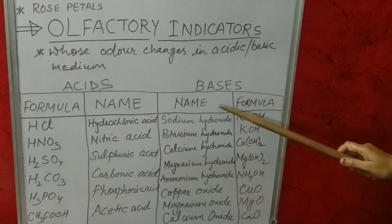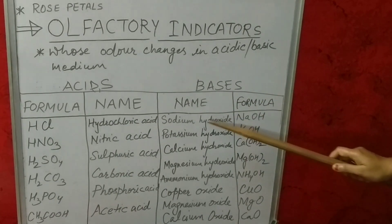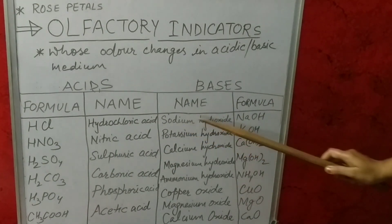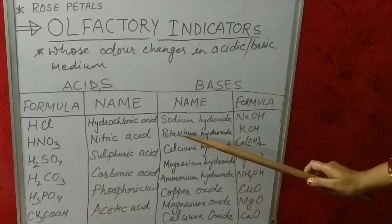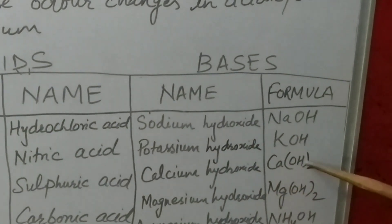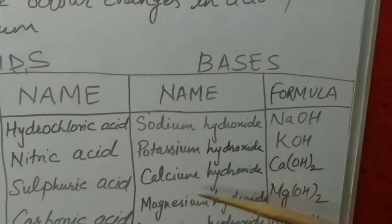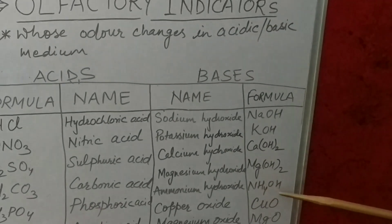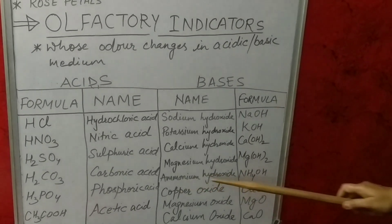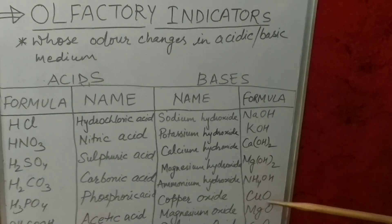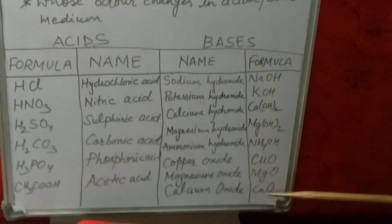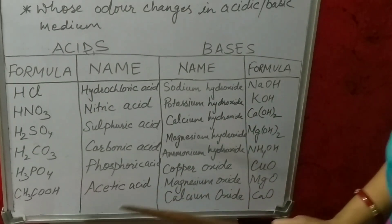Similarly, some of the bases are given here: NaOH — sodium hydroxide, KOH — potassium hydroxide, Ca(OH)2 — calcium hydroxide, Mg(OH)2 — magnesium hydroxide, NH4OH — ammonium hydroxide, CuO — copper oxide, MgO — magnesium oxide, and CaO — calcium oxide.